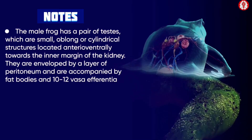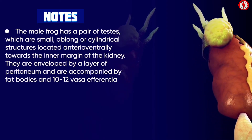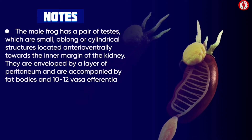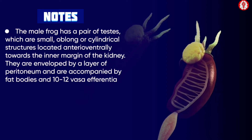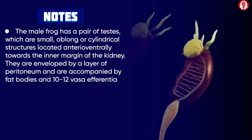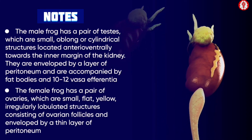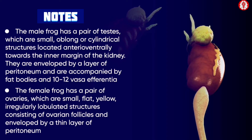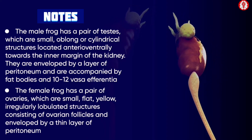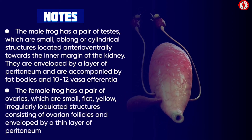The male frog has a pair of testes which are small, oblong or cylindrical structures located anterior ventrally towards the inner margin of the kidney. They are enveloped by a layer of peritoneum and are accompanied by fat bodies and 10 to 12 vasa efferentia. The female frog has a pair of ovaries which are small, flat, yellow, irregularly lobulated structures consisting of ovarian follicles and enveloped by a thin layer of peritoneum.